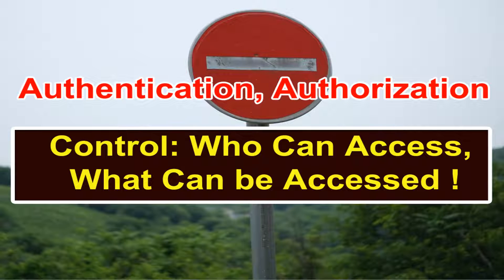The second best practice is that your APIs should be implemented in a proper controlled manner and you should have authentication as well as authorization enabled. When we talk about authentication and authorization it's very important that we know the difference between the two. Authentication basically provides information about who can access the data, and then authorization explains what can be accessed.